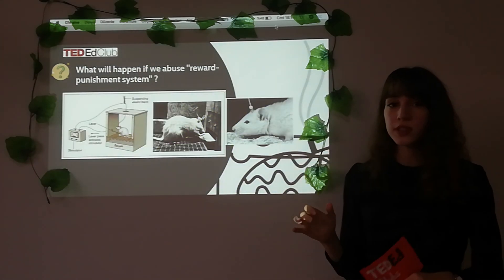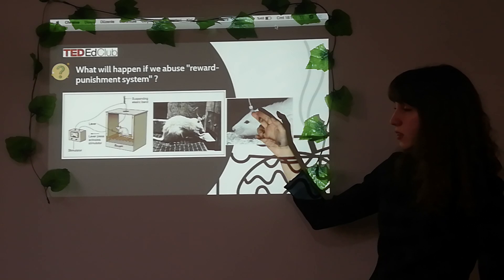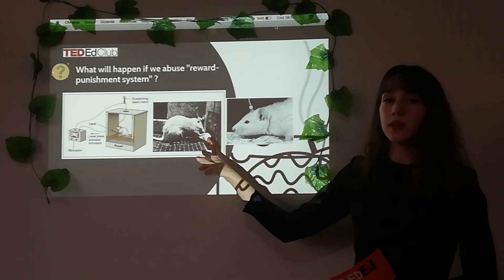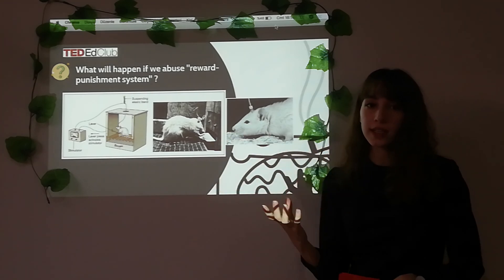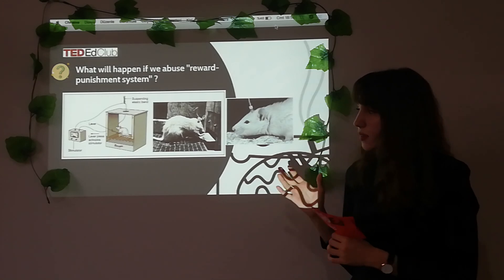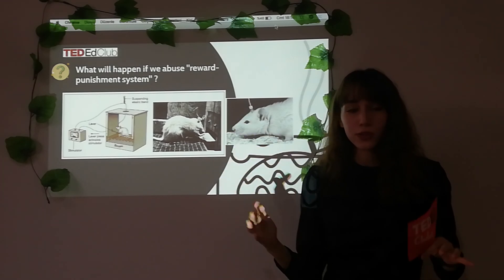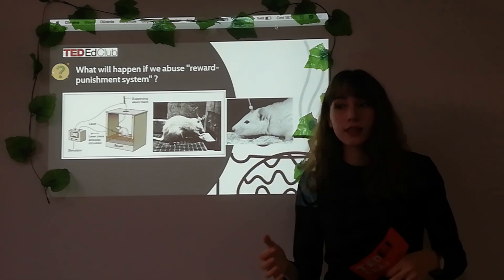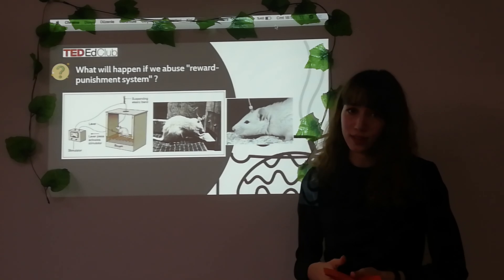What will happen if we abuse the reward and punishment system? Let me explain this with an experiment. We implant an electrode into a rat's brain — specifically the nucleus accumbens — and when the rat pedals, the nucleus accumbens is stimulated, the amount of dopamine increases, and the rat gets happy. Accordingly, the rat wants to do it again. In this experiment, we expected that sometimes the rats would pedal and get happy. But unfortunately, we saw that rats dropped everything — like eating or drinking. At the end of the experiment, unfortunately, the rat died.